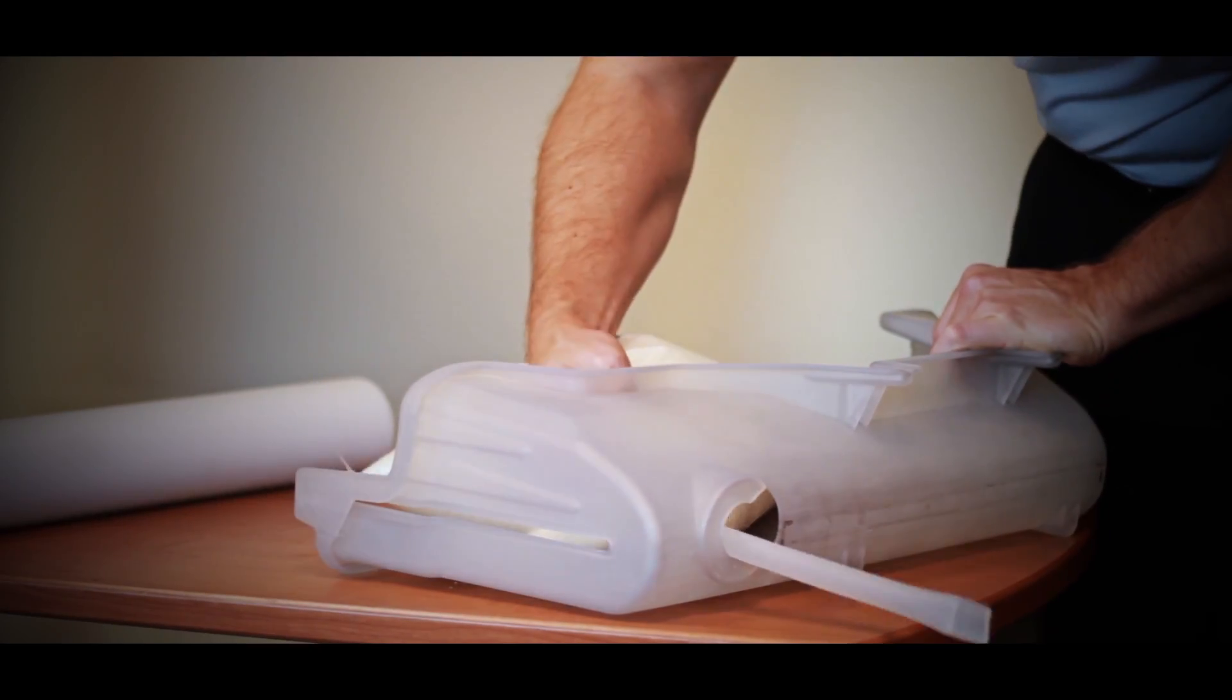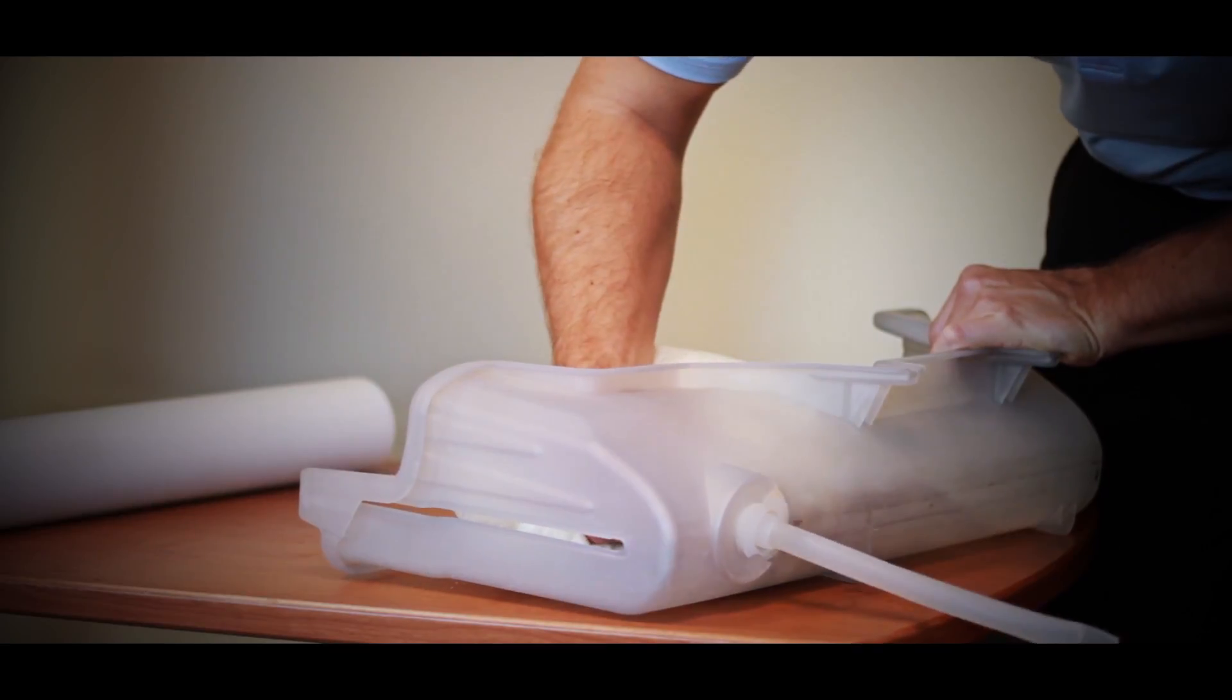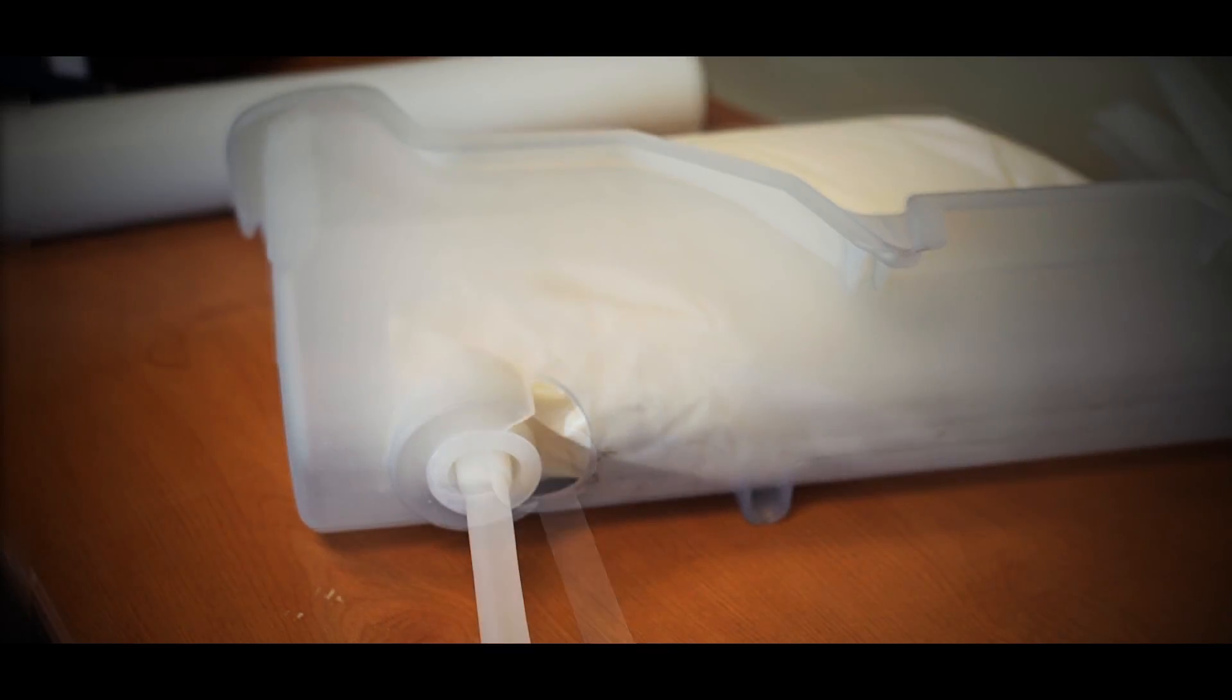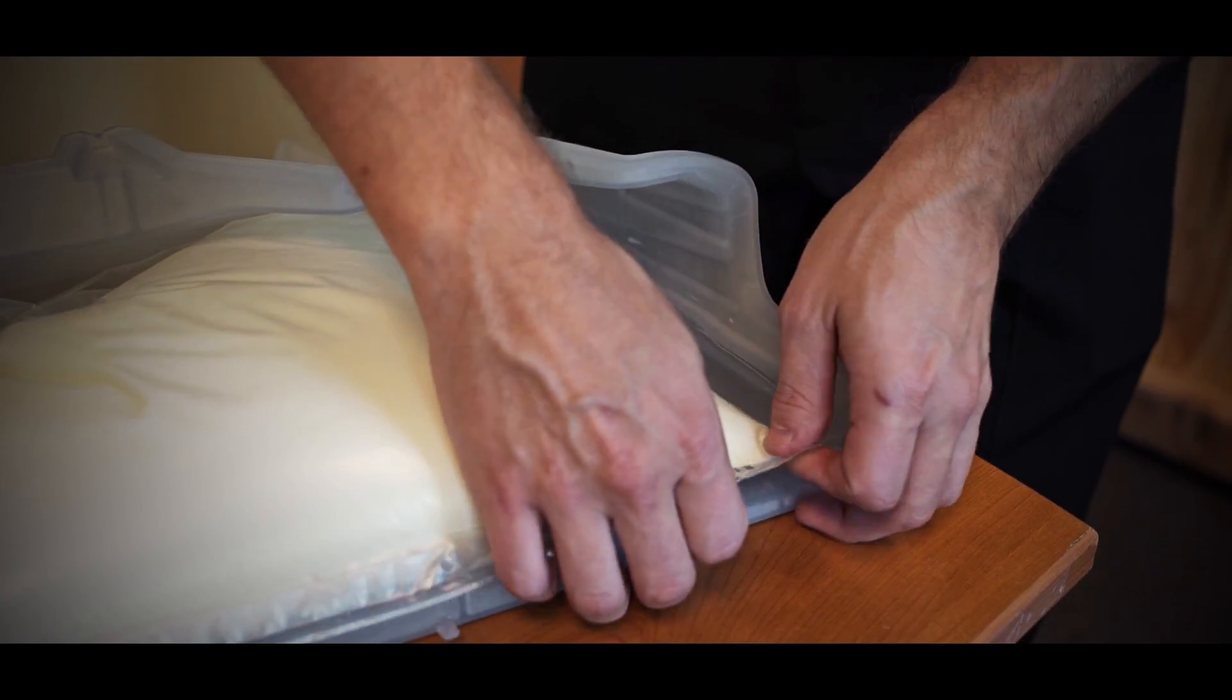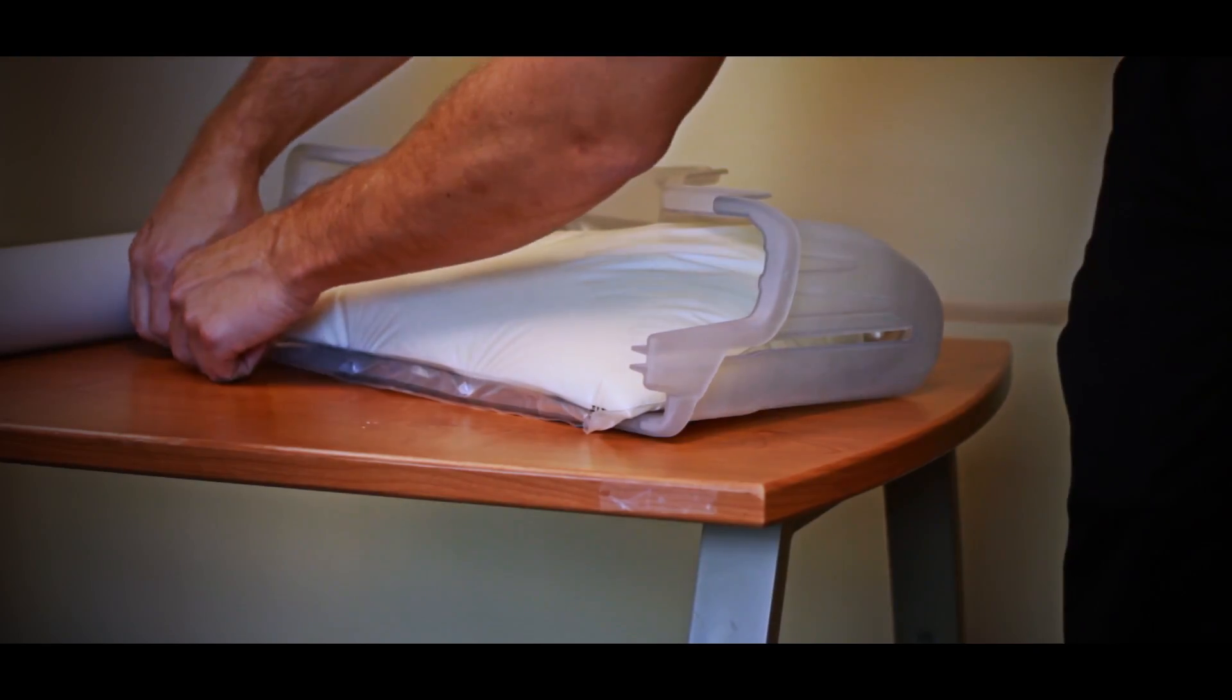While placing the bag in the carrier, pull the yogurt tube through the hole located at the bottom of the carrier. Then lock it into the slotted area. Lift and align the four holes on top of the bag with the four tabs at the top of the carrier.